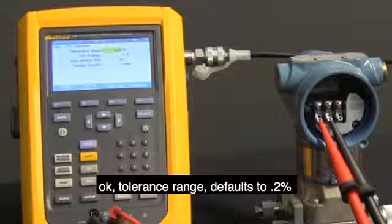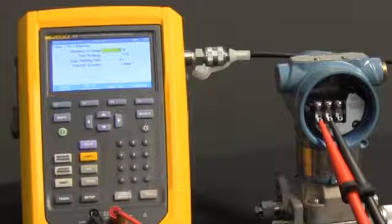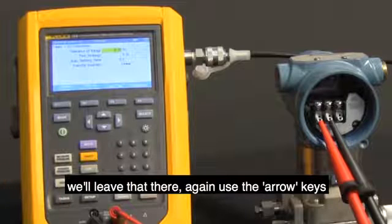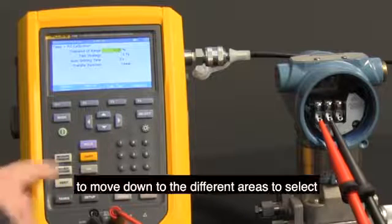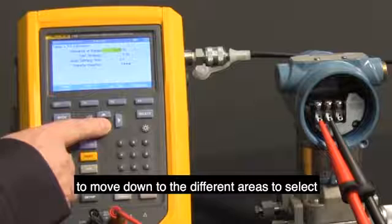Tolerance to range defaults to 0.2%. We'll leave that there. Again, use the arrow keys to move down to the different areas to select.